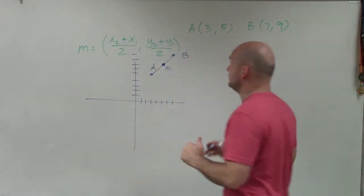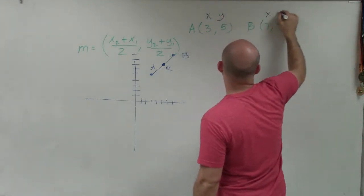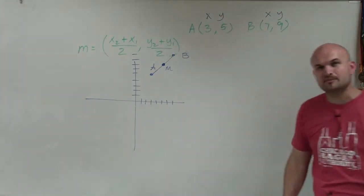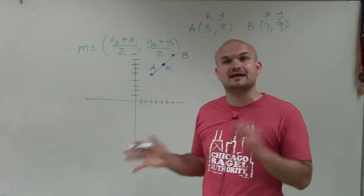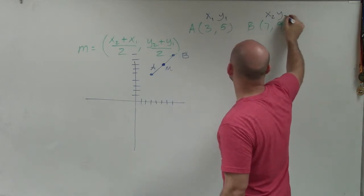So to do that, I'm going to use the formula. And you can see I have two coordinate points, x, y, and x, y. But the formula has these little subscripts, 2 and 1. And what we want to do is differentiate between our points. So I'll call this x1, y1. And I'll call this x2, y2.